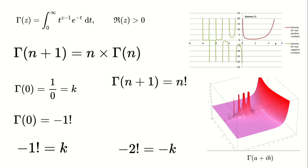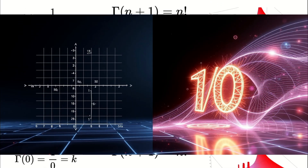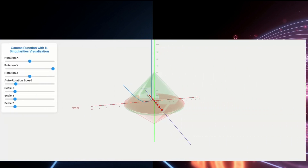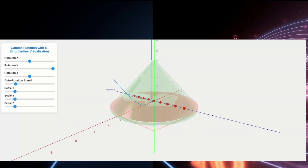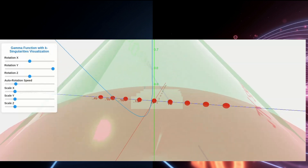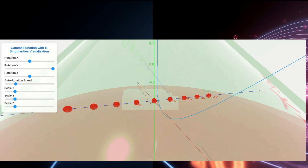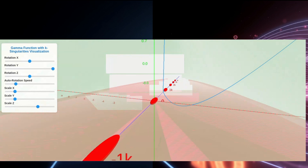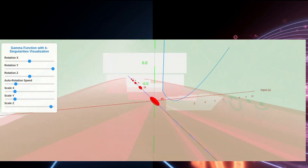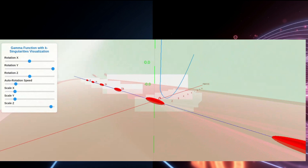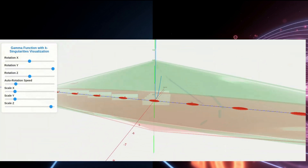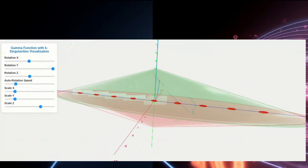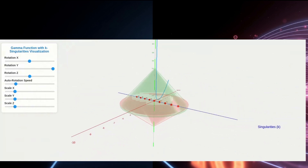This way, all factorials acquire unique values in the singularity number system. You might be wondering about the implications of defining 1 divided by 0 as k. While this concept might seem unconventional, I believe it is essential to define these numbers. Singularity numbers exhibit unique properties that cannot be ignored. These numbers cannot be represented on traditional 2D or 3D planes like complex numbers. While complex numbers are graphed in 3D, singularity numbers require a fourth dimension. Their behavior is fundamentally different, and they exist in a parallel mathematical dimension. As such, negative 1 factorial cannot be graphed alongside other numbers, because it operates in this parallel dimensional framework.